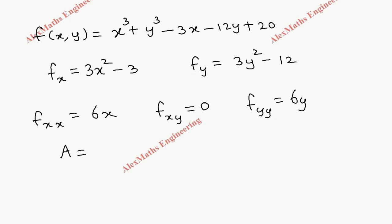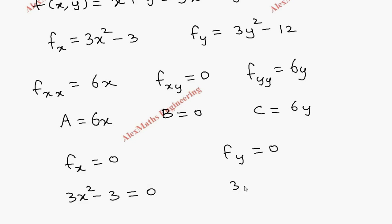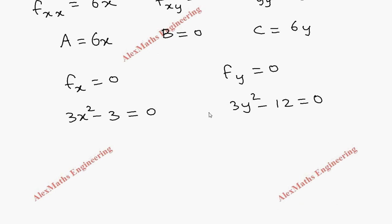Let's name A = 6x, B = 0, and C = 6y. To find the stationary points we equate fx = 0 and fy = 0. This gives 3x² - 3 = 0, so x² = 1, and x = ±1.